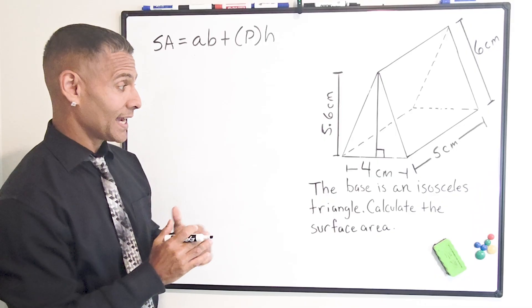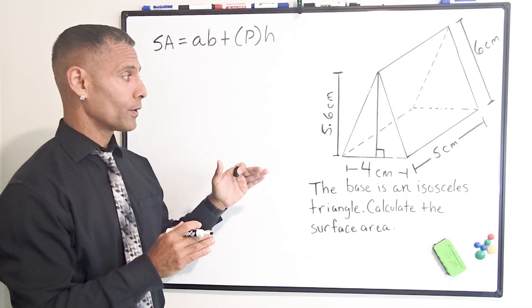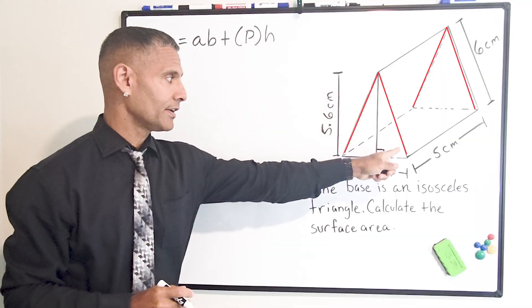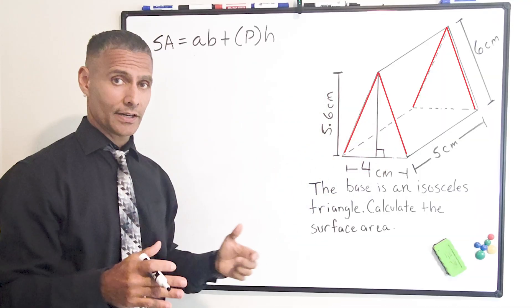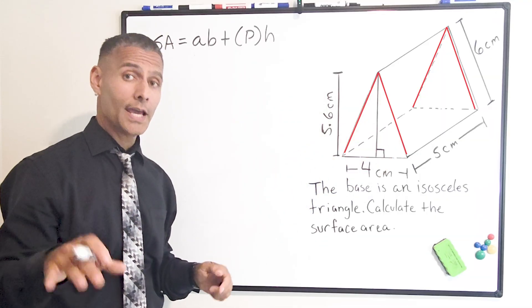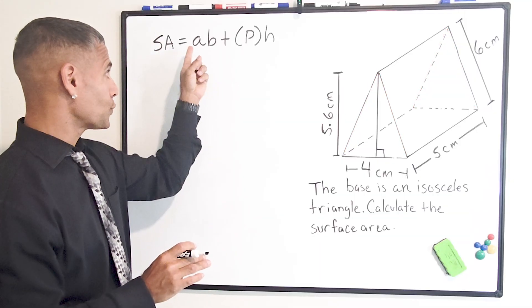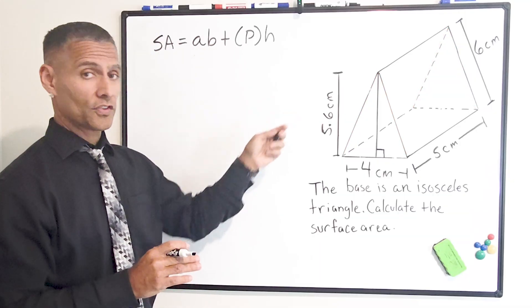Now, notice that we have an isosceles triangle for the triangular base. That means that two of the three side lengths of each triangle are going to be identical in length. So we have to keep that in mind as we proceed. So let us substitute each one of these variables with its corresponding length.